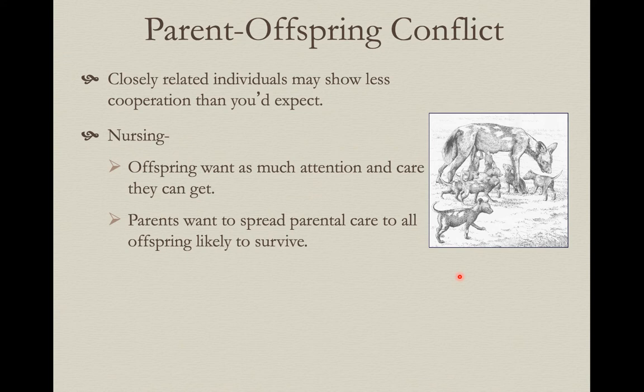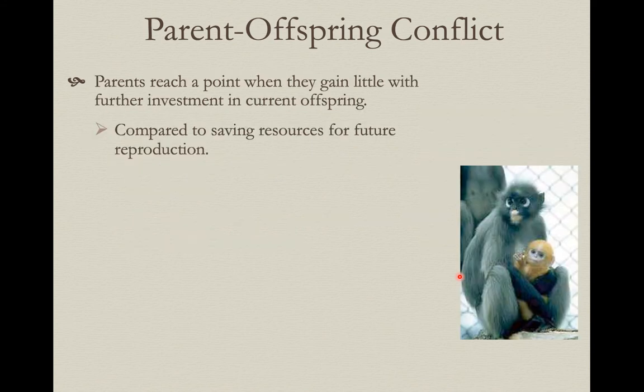If some of those siblings aren't going to survive anyway, each offspring is looking out for number one — behaving selfishly and wanting more than their share of milk. But from the mom's perspective, the sooner she can cut them off while they still have a reasonable chance of survival, the better for her future reproductive success. She's trying to maximize lifetime reproductive success, which involves a trade-off between what she can do now and what she can do in the future.